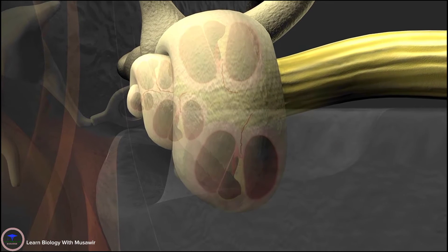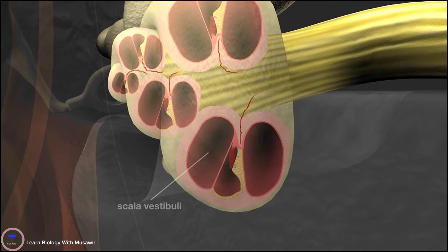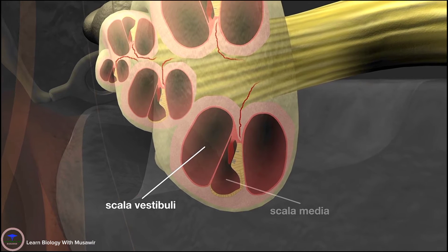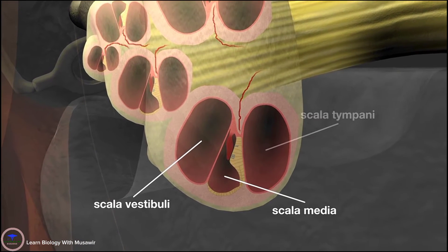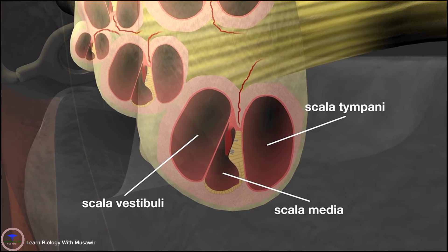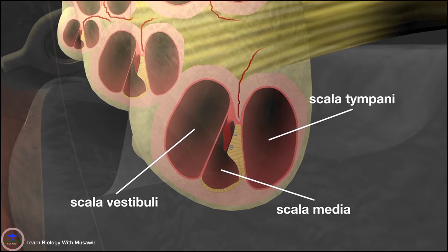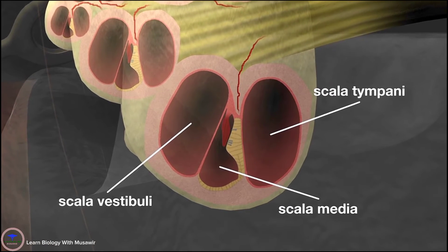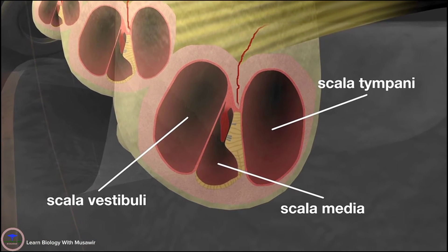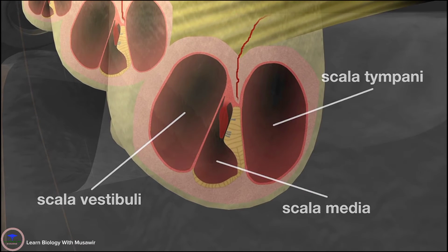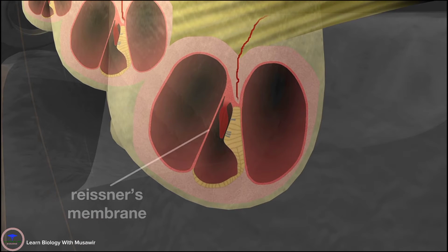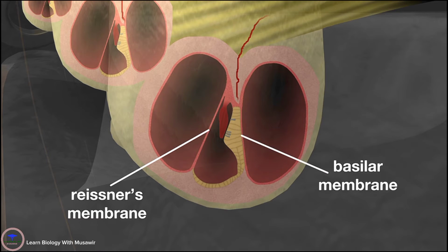It is split into three distinct sections known as the scala vestibulae, scala media, and scala tympani. The scala vestibulae and the scala tympani contain perilymph fluid. Reissner's membrane separates the scala vestibulae from the scala media, and the basilar membrane separates the scala media from the scala tympani.